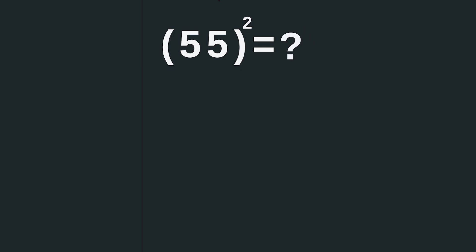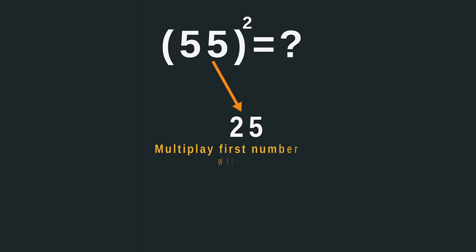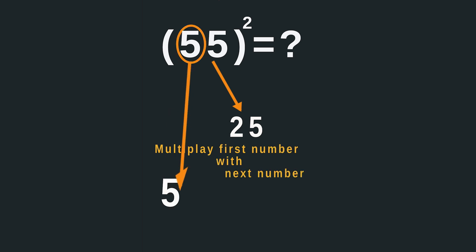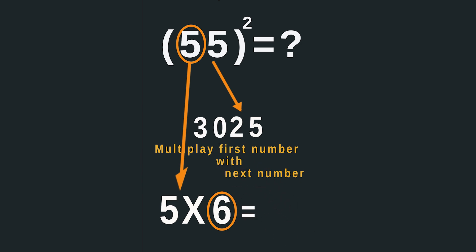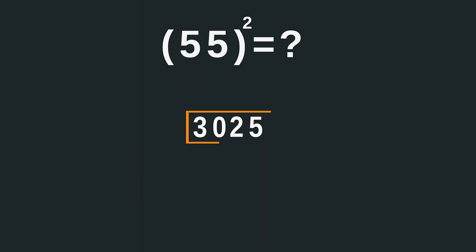Now 55. Multiply the last digits: 5 times 5 equals 25. Then multiply the first digit, which is 5, with its next digit, which is 6. So 5 times 6 equals 30. Now join these results together, 25 and 30, to get your final answer, which is 3025.